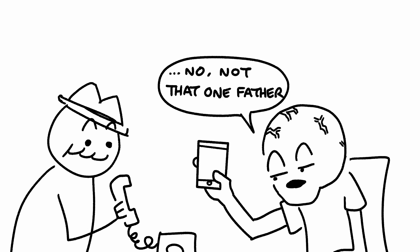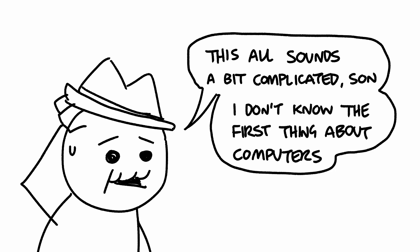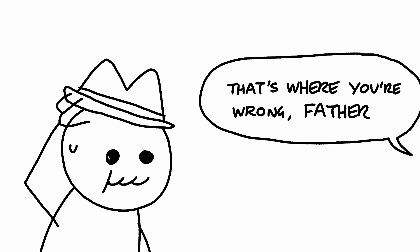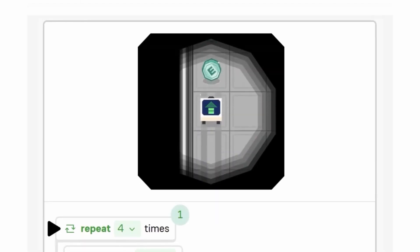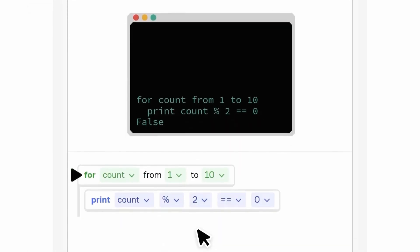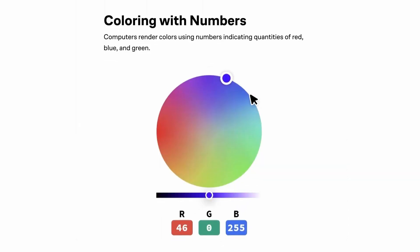No, no, not that one, father. This all sounds a bit complicated, son. I don't know the first thing about computers. That's where you're wrong, father. It's never been easier to learn. When I started Brilliant's course on programming and computer science, I knew nothing. But after Brilliant helped me through the basics, I was writing programs all by myself.